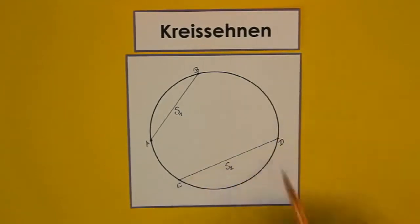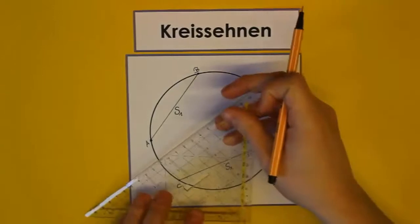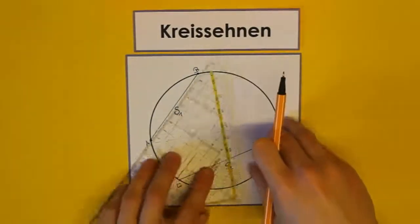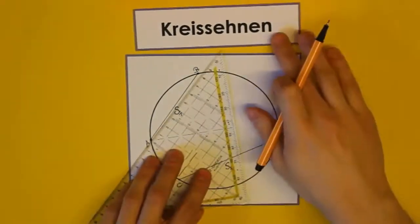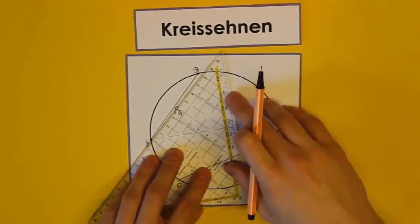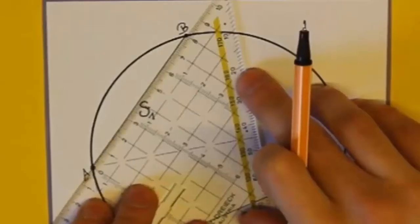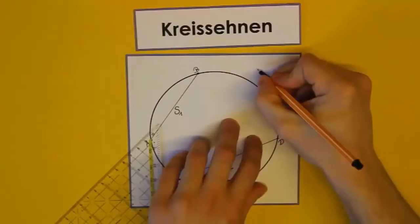Wir können jetzt die Länge einer Kreissehne auch messen, wenn sie bereits eingezeichnet ist. Dazu brauchen wir natürlich ein Lineal. Messen wir einmal die Länge von S1. Dazu müssen wir mit dem Lineal einfach in einen der beiden Punkte anlegen. Ich lege es einmal bei Punkt A an. Und wie ihr sehen könnt, ist S1 genau 8 cm lang.